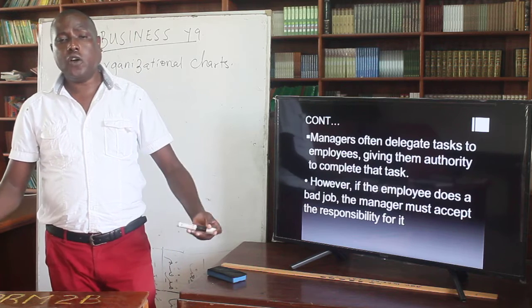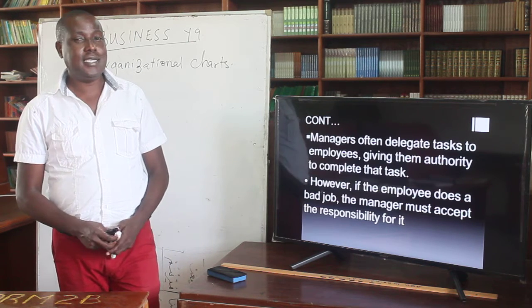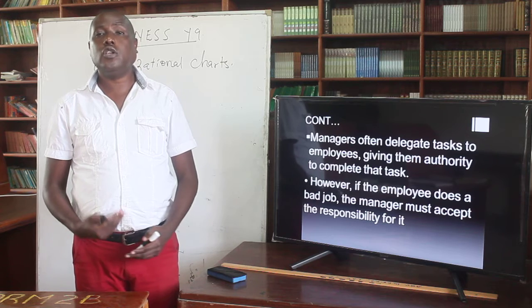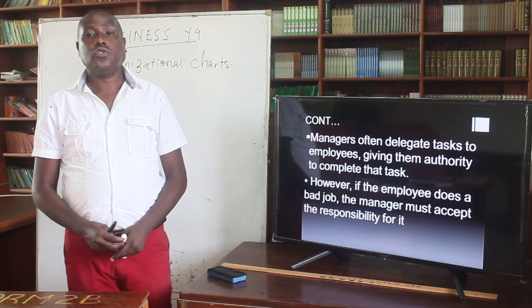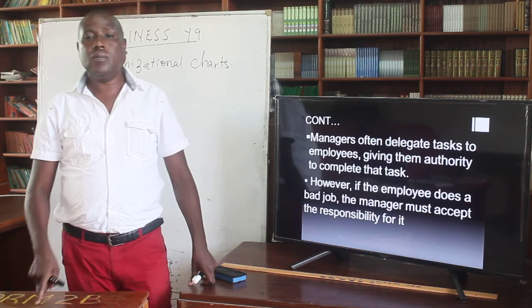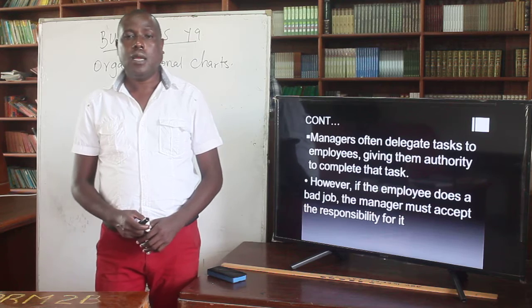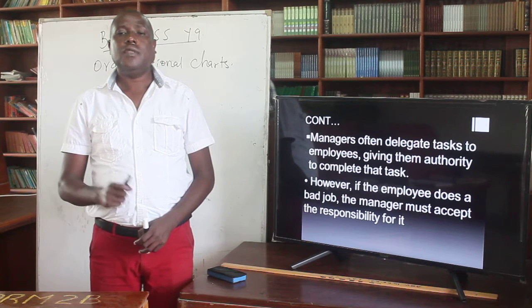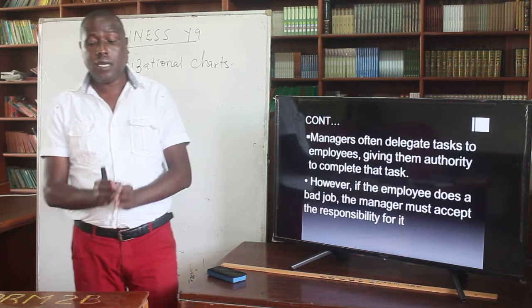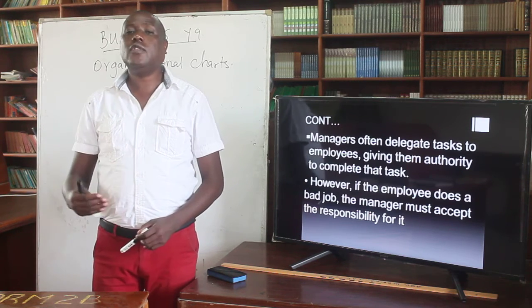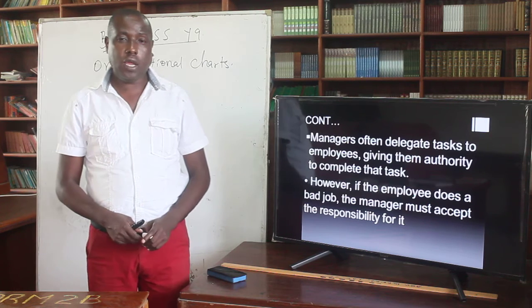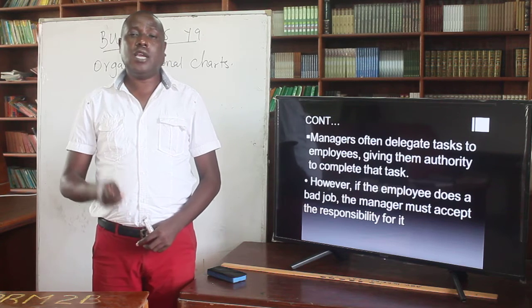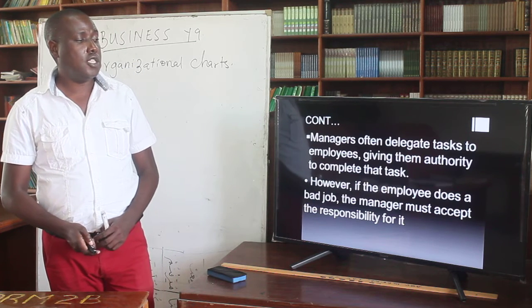Managers cannot obviously do everything, so they often delegate tasks to employees, giving them authority to complete various tasks. However, if the employee does a bad job, the manager must accept responsibility for it, because that job belongs to the manager. If they delegate it to a junior or subordinate employee and the employee does a bad job, the manager must take responsibility and own the mistake.